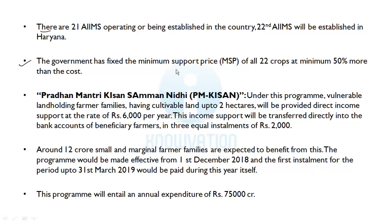The government has fixed the Minimum Support Price, MSP, of all 22 crops at a minimum 50% more than the cost. This decision was also taken in last year's budget — that the MSP will be at minimum 50% above cost — and now it has been extended to all 22 crops that our farmers grow.